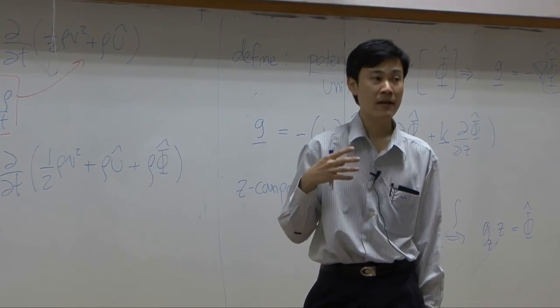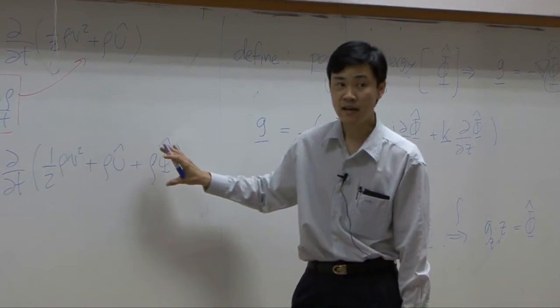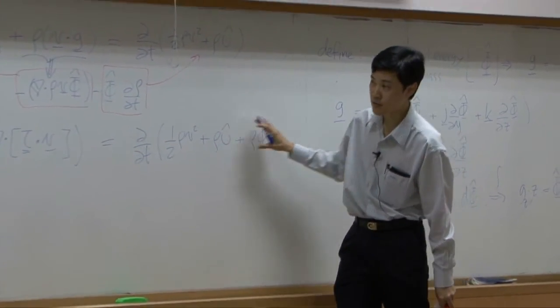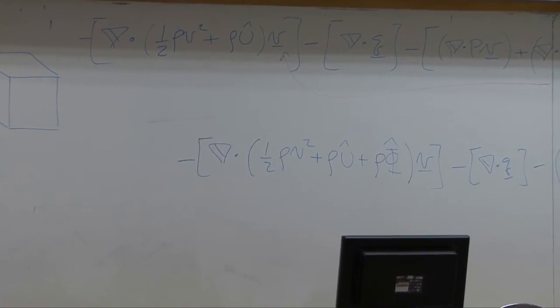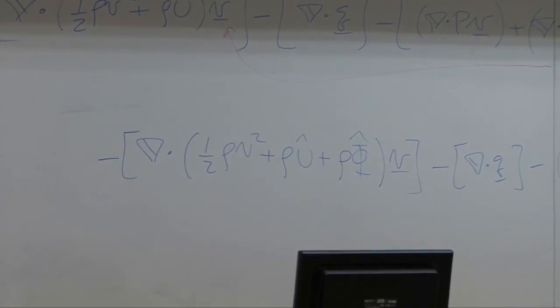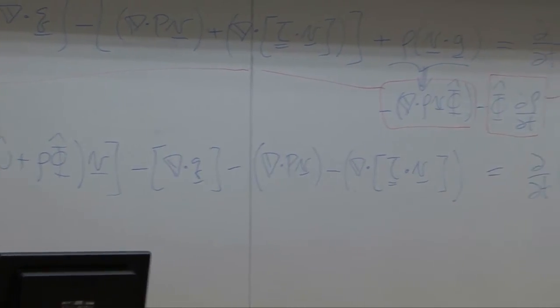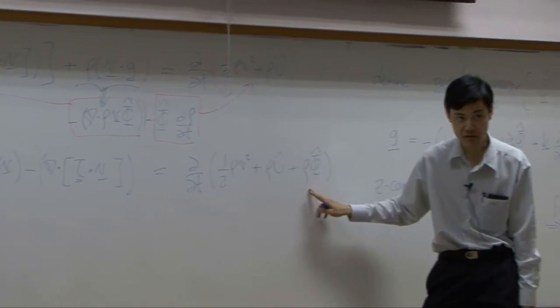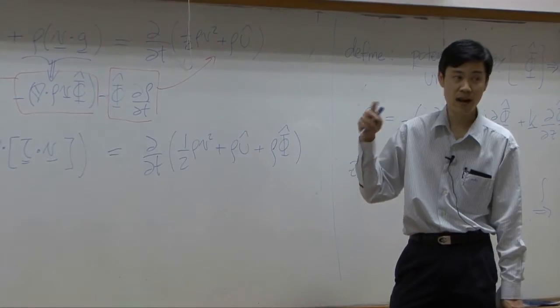Alright, so by physical meaning, this one is accumulation term. If you look into the equation we obtained, this one would be the change in energy in the whole system with respect to time. And if you look into each term here, it means that the change in kinetic, internal, and potential energy. So it is considered as accumulation term in our system.